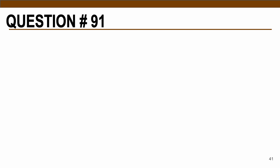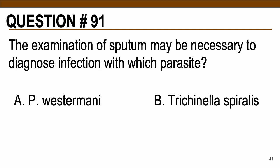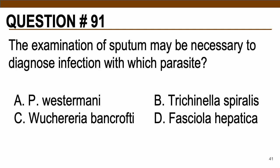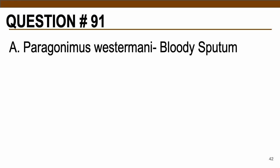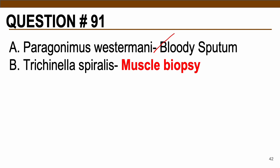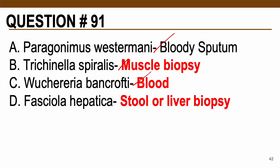Question number 91: The examination of sputum may be necessary to diagnose infection with which parasite? Choices: A — Paragonimus westermani, B — Trichinella spiralis, C — Wuchereria bancrofti, D — Fasciola hepatica. The correct answer is letter A, Paragonimus westermani — specifically bloody sputum. For Trichinella spiralis, muscle biopsy is the specimen of choice for encysted larvae. For Wuchereria bancrofti, blood is used to diagnose microfilariae. For Fasciola hepatica, stool or liver biopsy — stool for eggs, liver biopsy for adult worms.